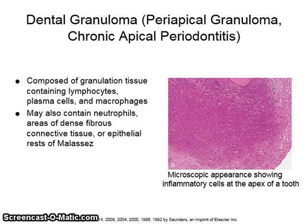The dental granuloma is composed of granulation tissue containing lymphocytes, plasma cells, and macrophages. It may also contain neutrophils, areas of dense fibrous connective tissue, or epithelial rests of Malassez.